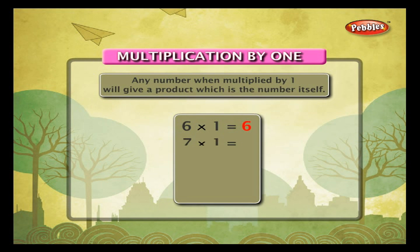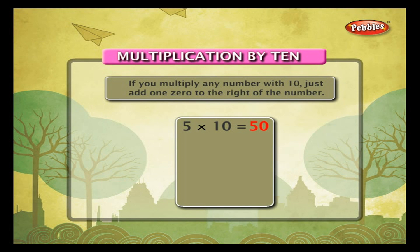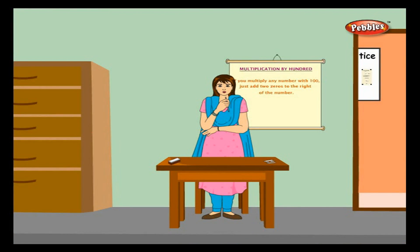Multiplication by 1: any number multiplied by 1 equals that number — 9 into 1 is equal to 9, and so on. Multiplication by 10: if you multiply any number by 10, just add one zero to the right of the number. For example, 5 into 10 is 50, 7 into 10 is 70, 3 into 10 is 30, 4 into 10 is 40, 8 into 10 is 80, and so on.